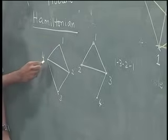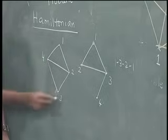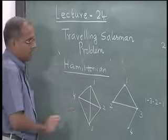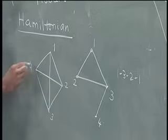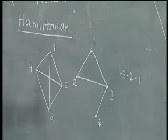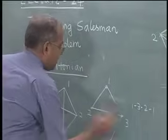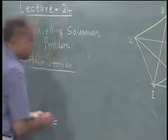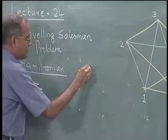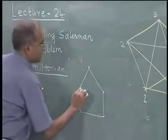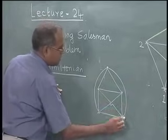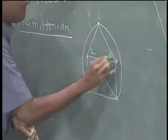A graph with circuit 1 to 2, 2 to 3, 3 to 4, 4 to 1 has a Hamiltonian circuit. This is the same as 1 to 4, 4 to 3, 3 to 2, 2 to 1. If a graph is Hamiltonian, it may have more than one Hamiltonian circuit. From graph theory, we also have completely connected graphs, where every vertex is connected to every other vertex — and clearly such a graph is Hamiltonian.